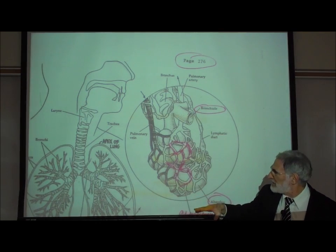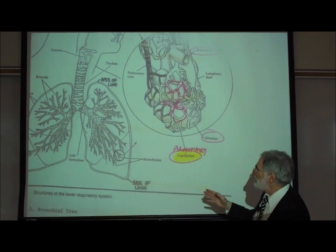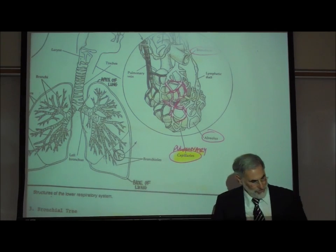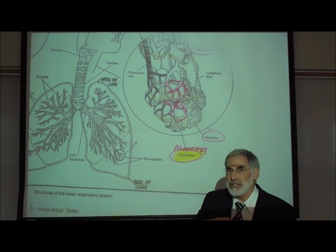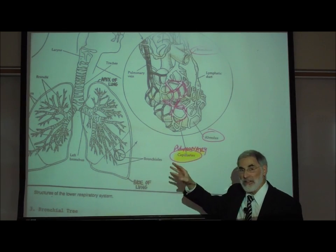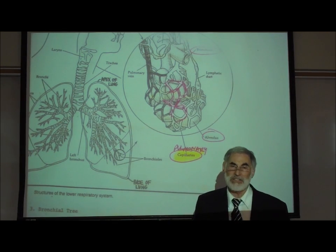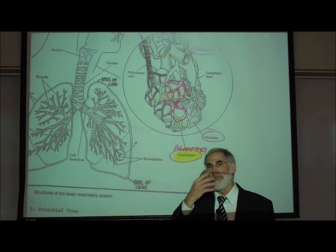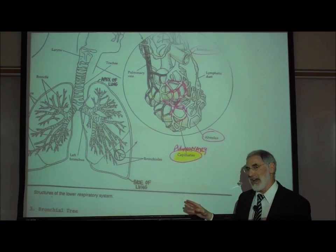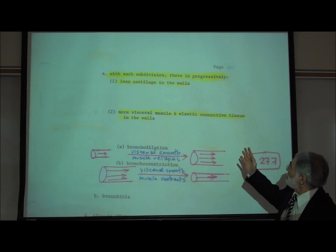Surrounding the alveoli or air sacs is a profuse network of pulmonary capillaries. This is where the exchange of oxygen and carbon dioxide occurs. The only place where oxygen can enter the bloodstream or carbon dioxide can leave is at the microscopic level of the alveoli and pulmonary capillaries — no oxygen can enter the bloodstream from the throat or trachea.